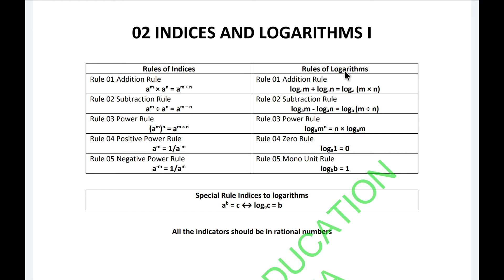Now the addition rule for logarithms: if you add two logarithmic values with the same base, log base a of m plus log base a of n equals log base a of m times n. The subtraction rule is the opposite: log base a of m minus log base a of n equals log base a of m divided by n.